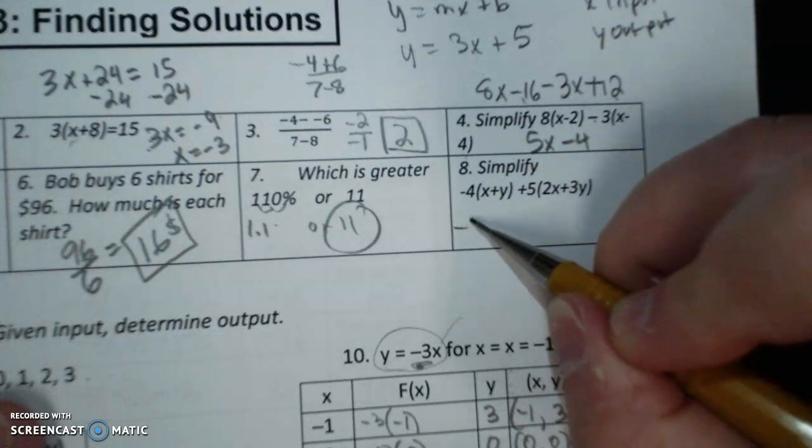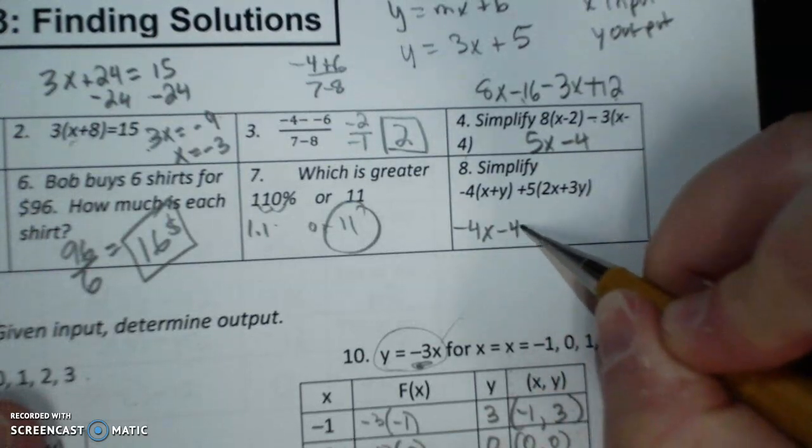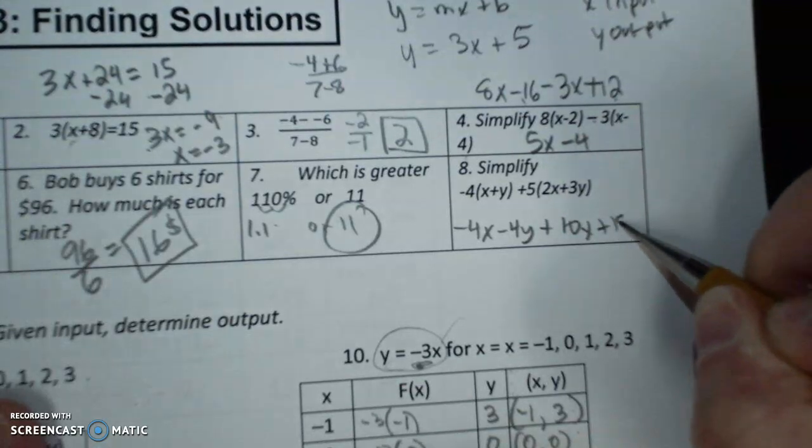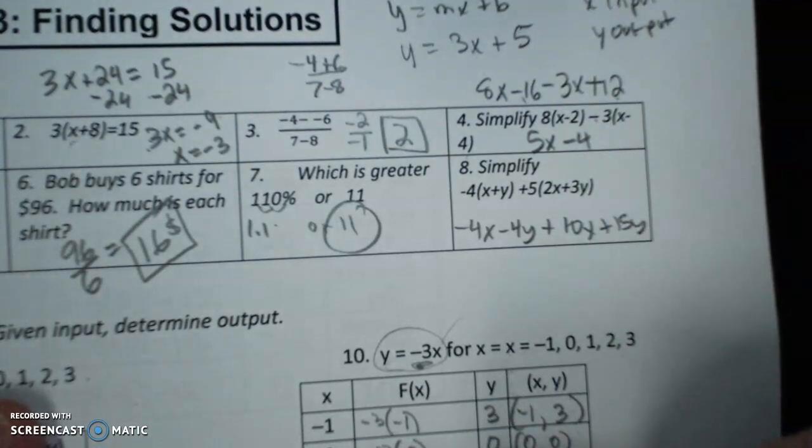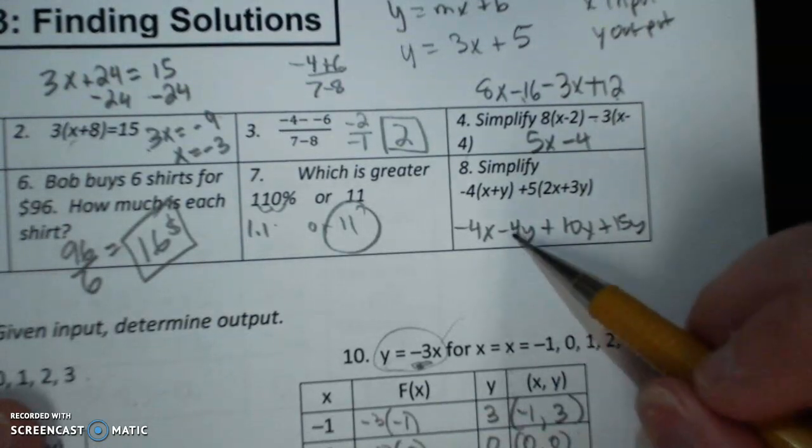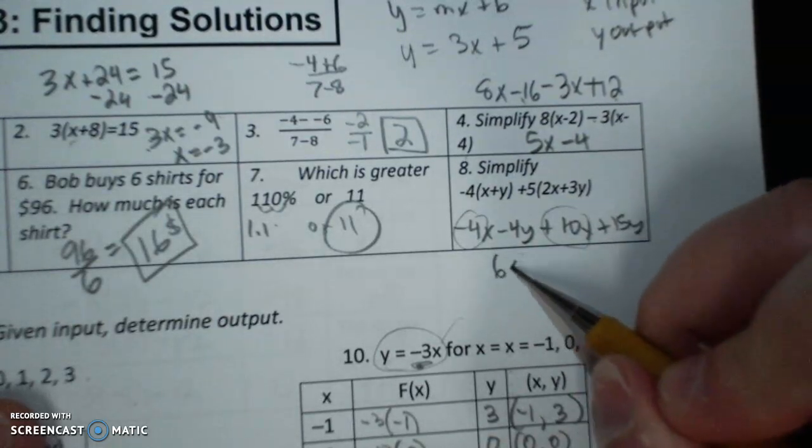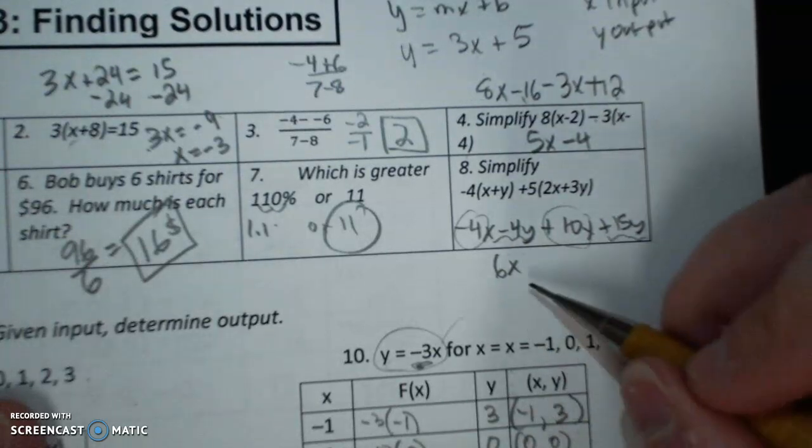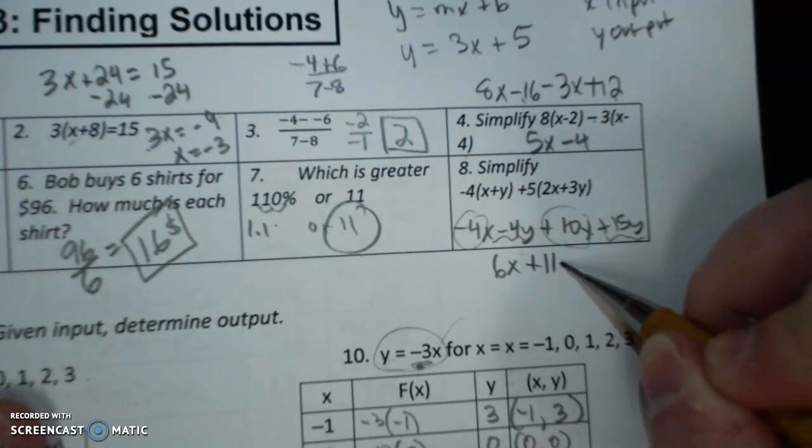Simplify. Distribute negative 4X minus 4Y. Distribute 10X plus 15Y. Negative 4X and positive 10X is 6X. Negative 4Y and plus 15Y is plus 11Y.